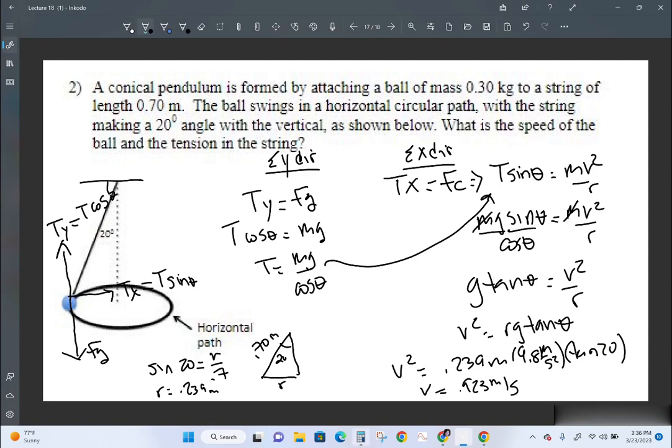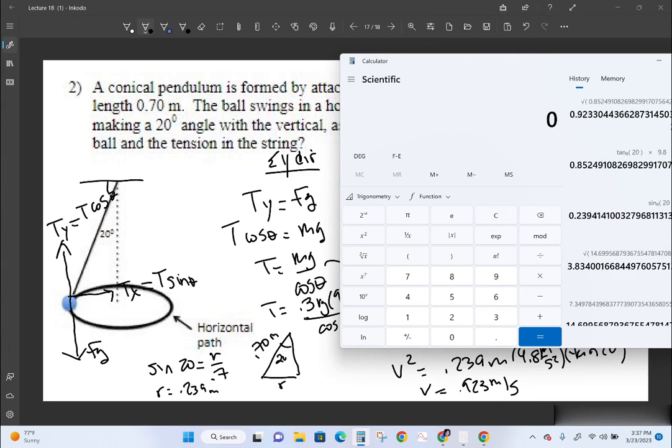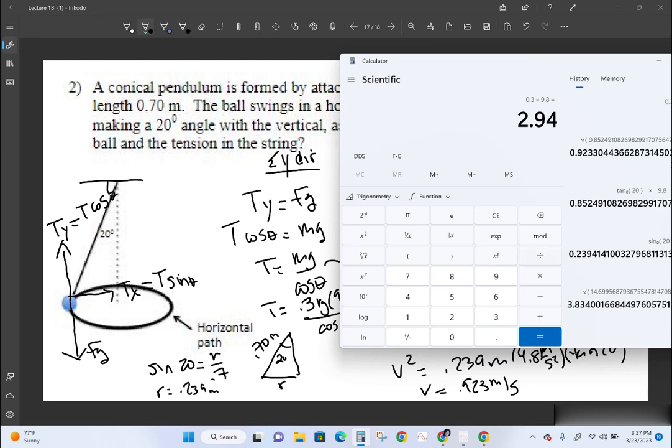And T is going to be equal to 0.3 kilograms times 9.8 meters per second squared divided by cosine of 20. All right, so it's 0.3. Let's clear everything out. 0.3 times 9.8 divided by the quantity 20 cosine.